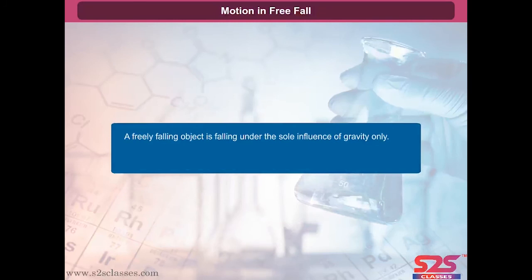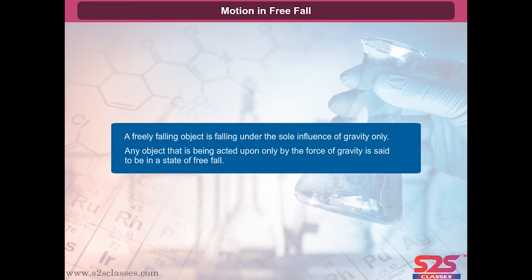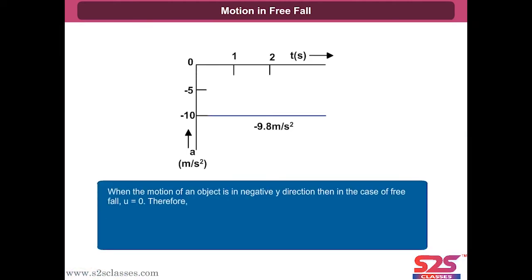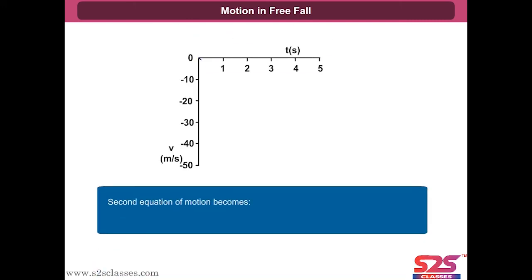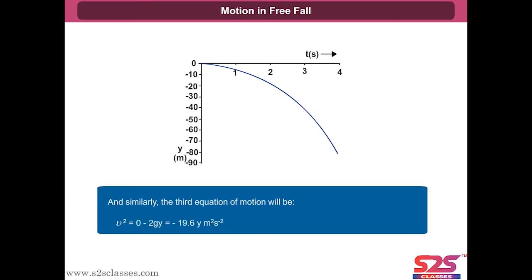Motion in free fall: a freely falling object is falling under the sole influence of gravity only. Any object acted upon only by the force of gravity is said to be in a state of free fall. If the motion is in the negative Y direction, then U equals zero and A equals minus G, which equals minus 9.8 m/s². The first equation becomes V equals minus GT; the second becomes Y equals minus half GT², which equals minus 4.9T² meters; and the third becomes V² equals minus 2GY, which equals minus 19.6Y m²/s².